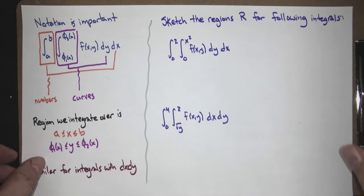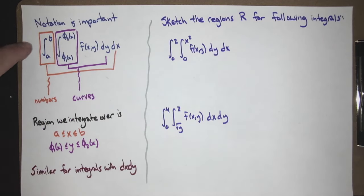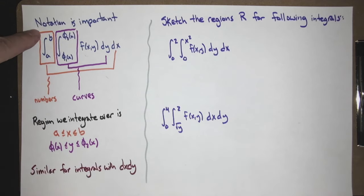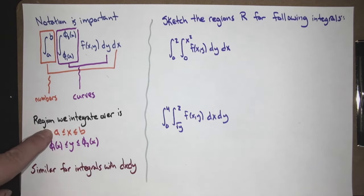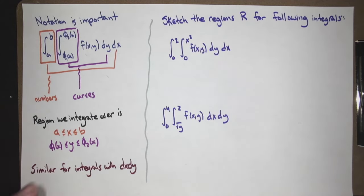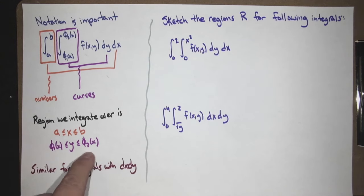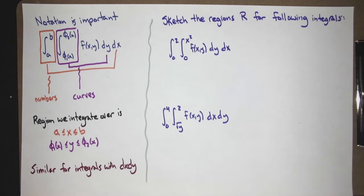Notation is important. For the outer layer, we're going between numbers: a ≤ x ≤ b. For the inner layer, we're going between curves: y goes from curve phi1(x) up to curve phi2(x). Similar things apply when we integrate dx dy.